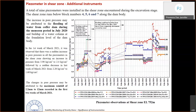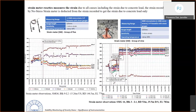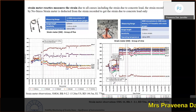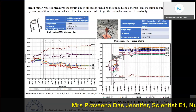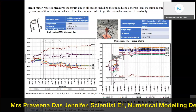The piezometers proved effective during the July 2020 monsoon, where water column buildup was immediately recorded, and again in March when small precipitation events were detected. Strain meters are installed in groups: a group of five (in five directions) and a group of nine (in nine orientations) to capture strain in all directions beyond simply X, Y, Z axes.